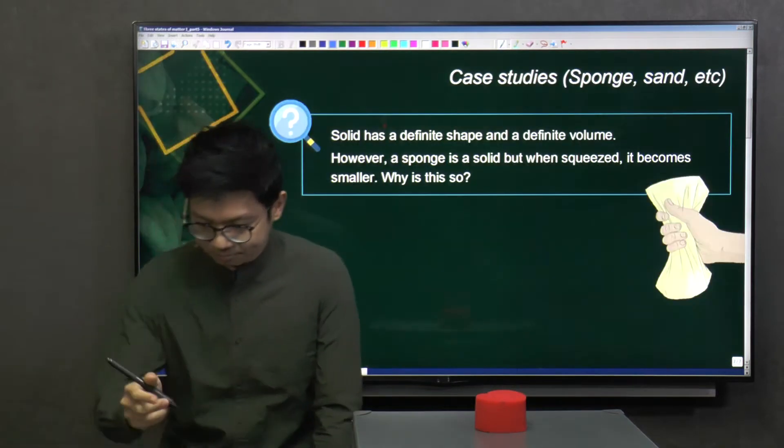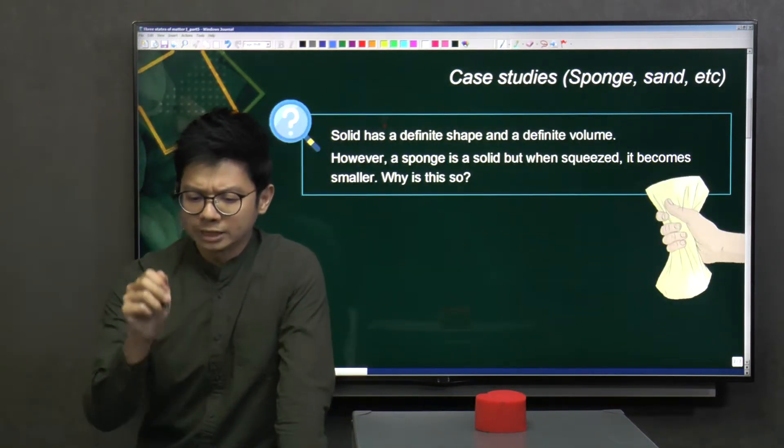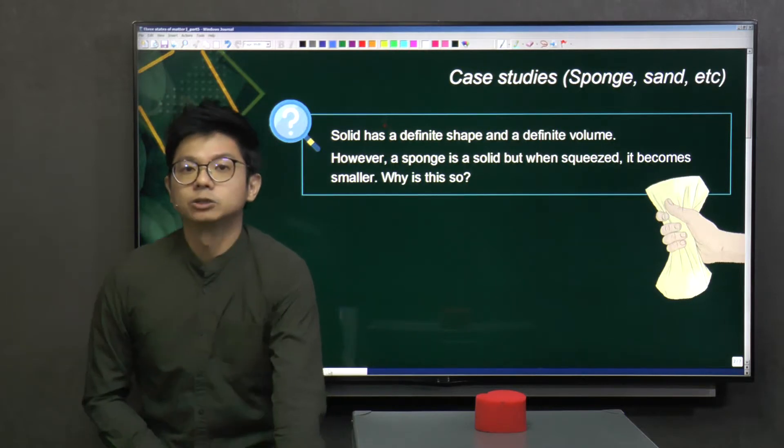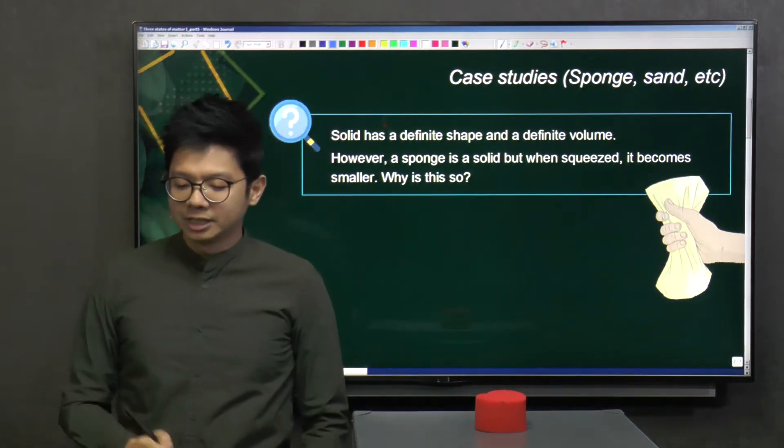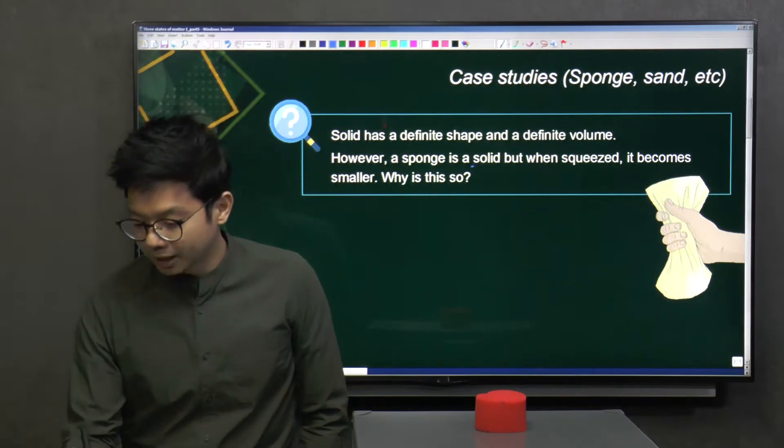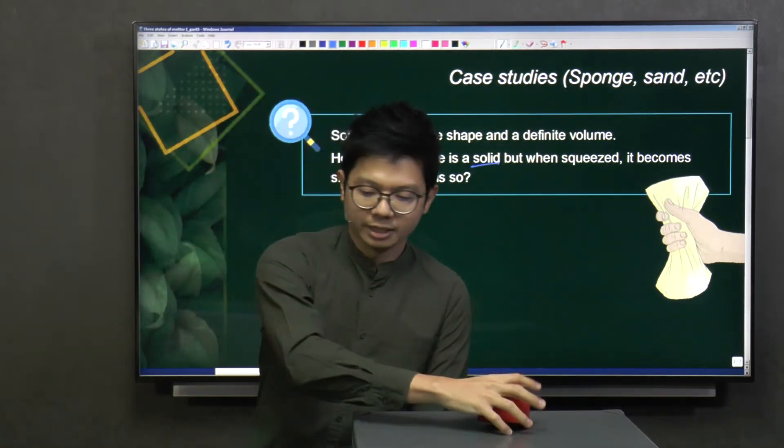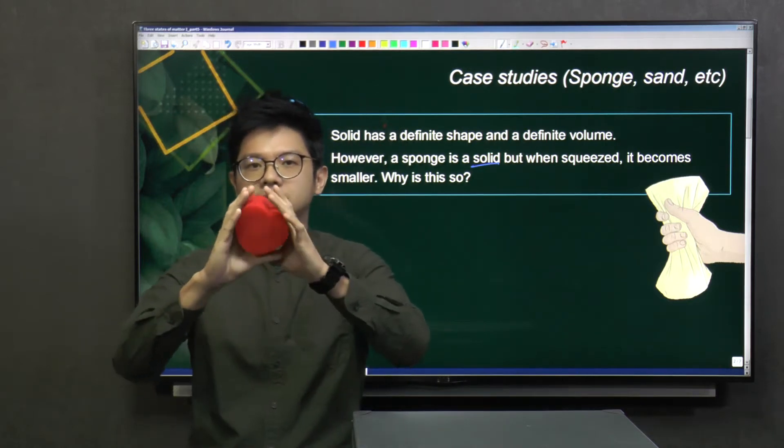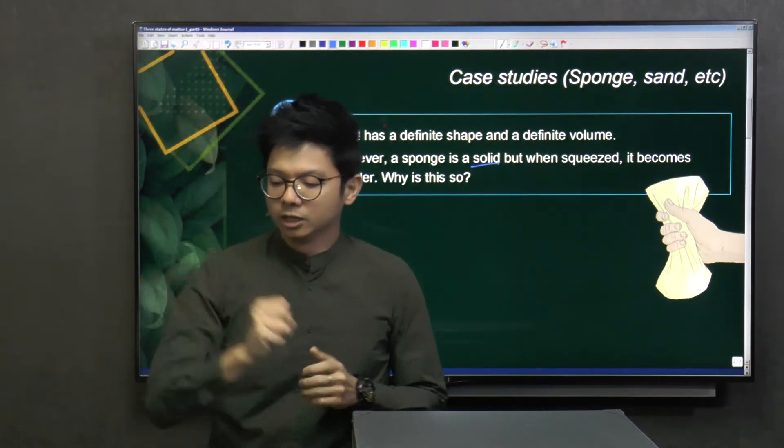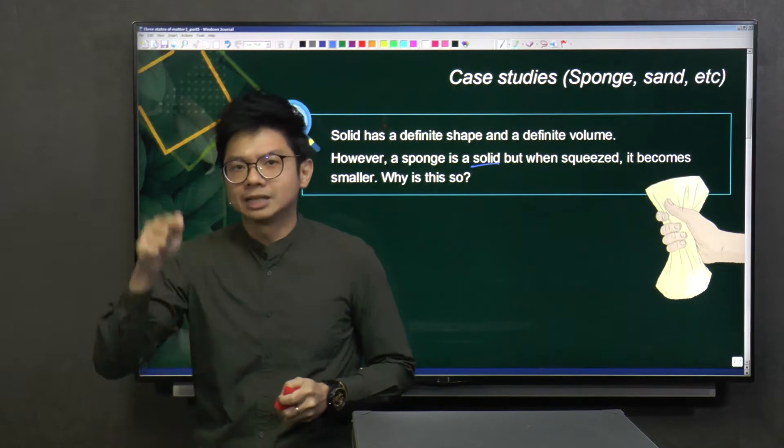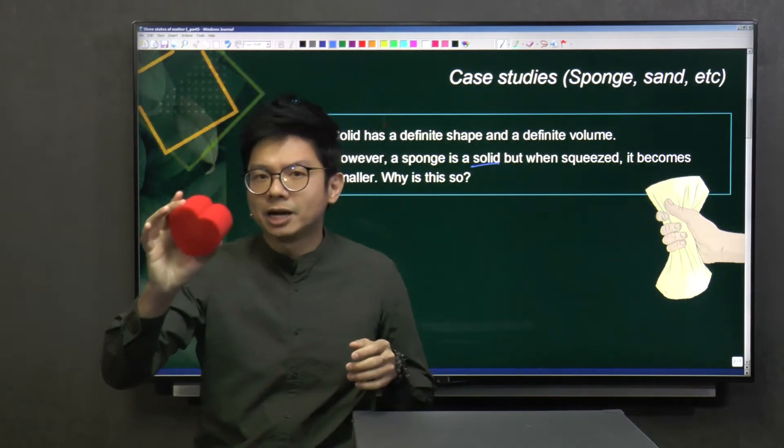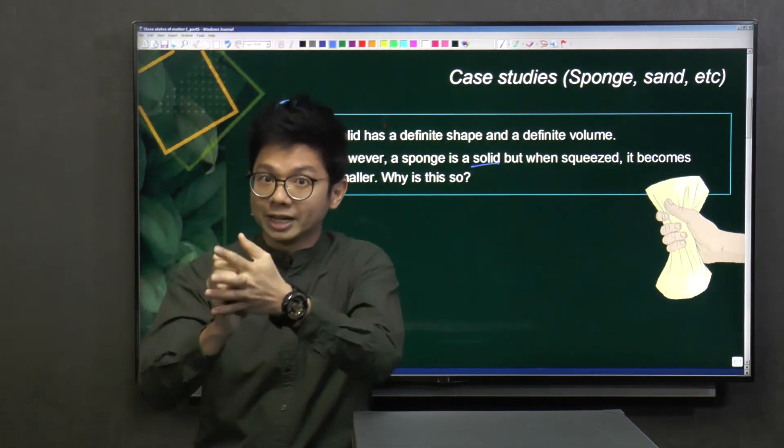Let's look at this question. We know that solid has a definite shape and a definite volume. However, a sponge is a solid. But do you realize that when you squeeze the sponge, it actually becomes smaller? So why is this so? Does it tell you that a sponge is actually not solid because it can be compressed?